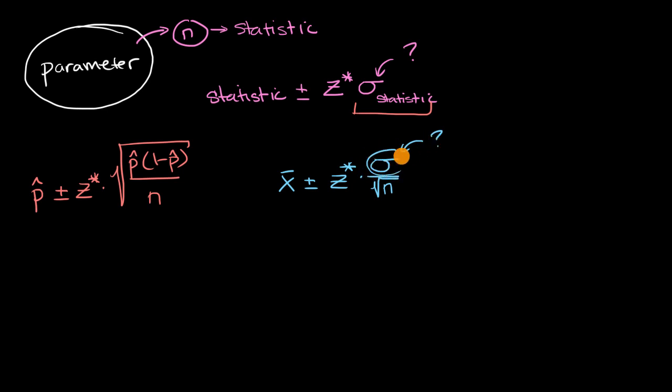In fact, it's very unusual to know this. And so sometimes you will say, okay, if we don't know this, let's just figure out the sample standard deviation of our sample here. So instead we'll say, okay, let's take our sample mean plus or minus z star times the sample standard deviation of our sample, which we can calculate, divided by the square root of n.